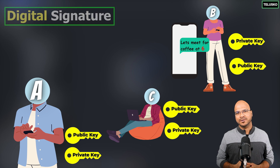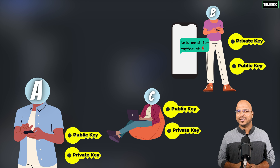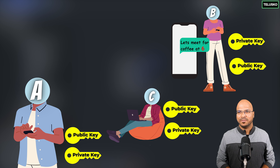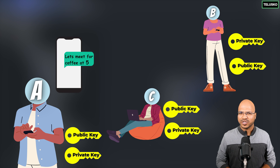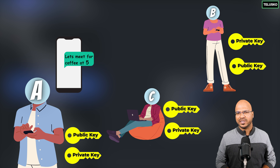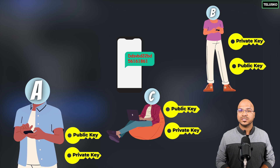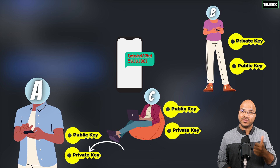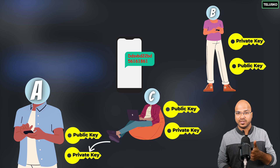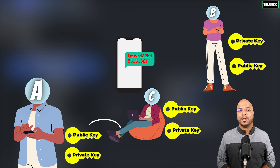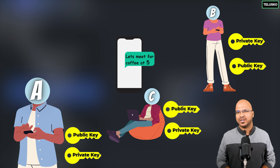However, there is one problem with digital signatures alone — we don't have security. We have proof of who sent it, but anyone can read the data. C can decrypt the packet using A's public key and read the message. So we need to solve both problems simultaneously.